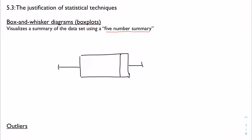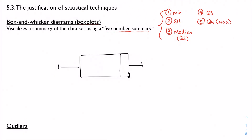This five number summary is the minimum and all four quartiles: Q1, Q2 (which is the median), Q3, and Q4, which is the maximum. We're going to show those on our box plot in the order that they appear — it makes sense to show this in numerical order. So the minimum, Q1, Q2, Q3, and Q4.